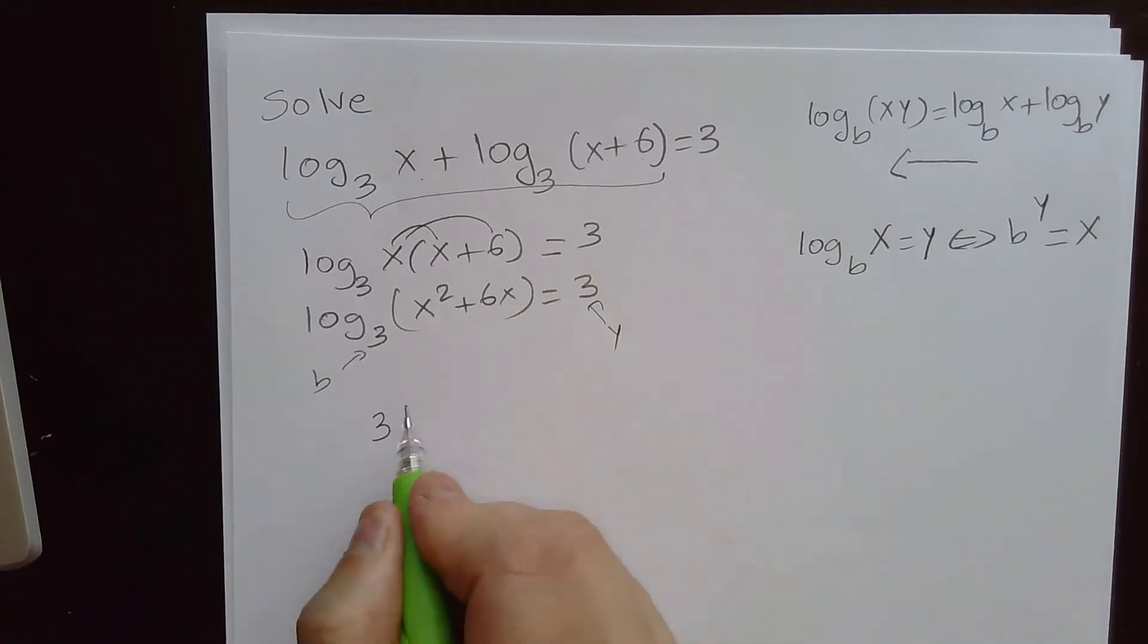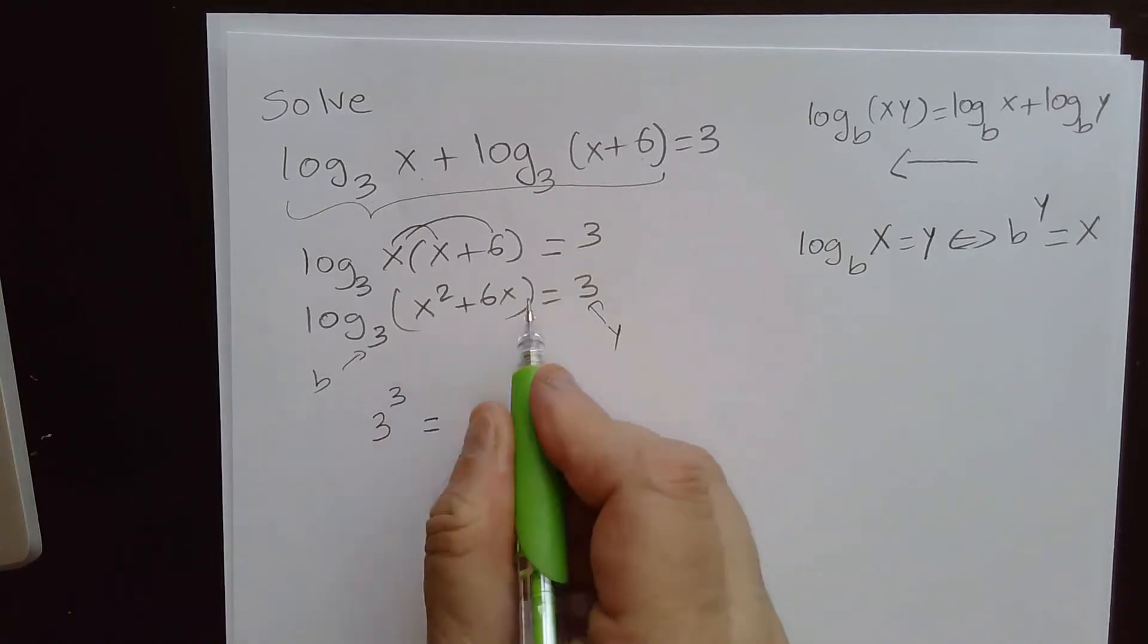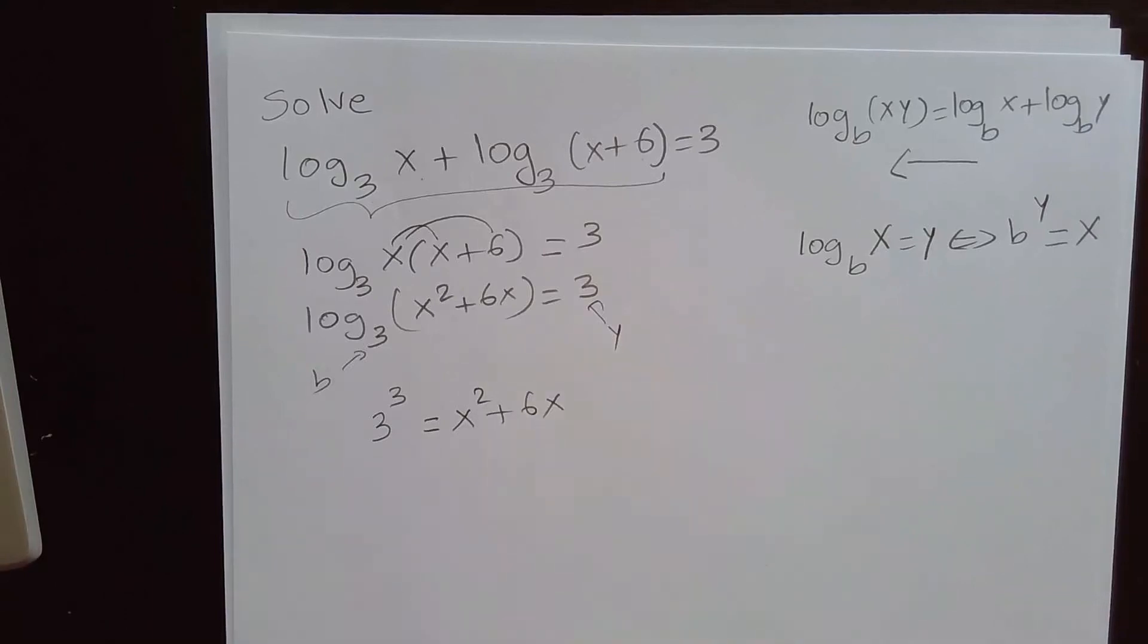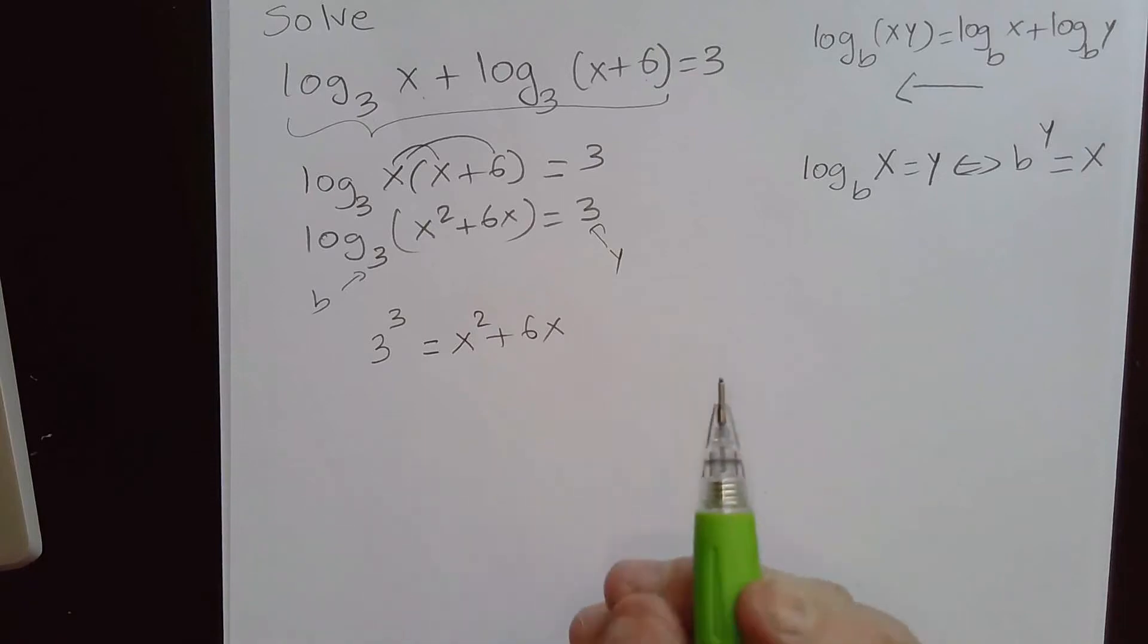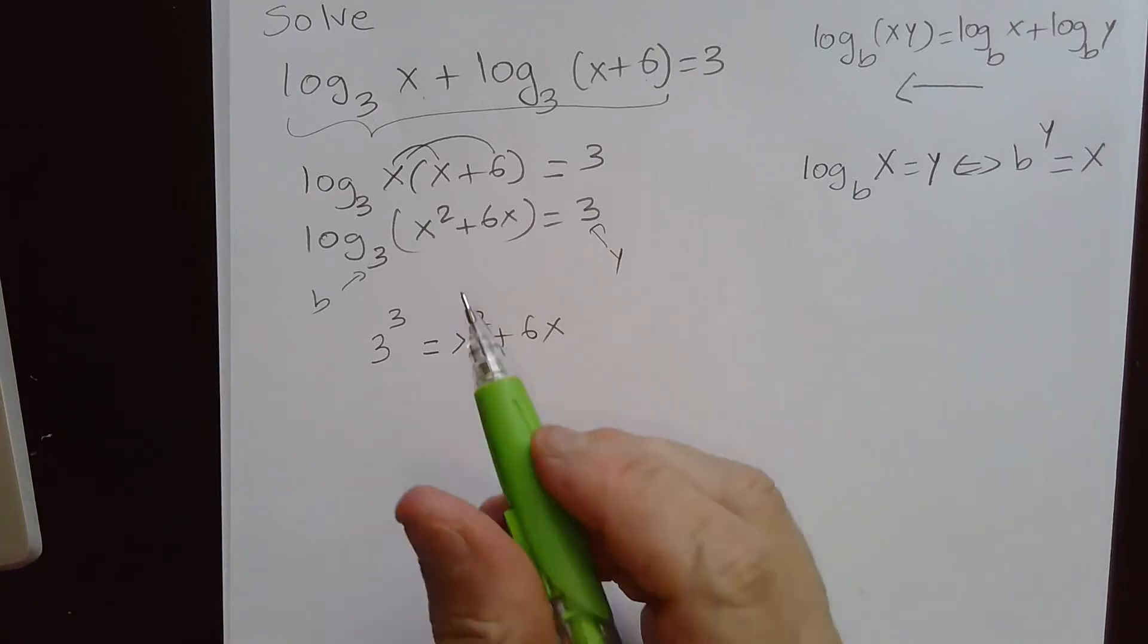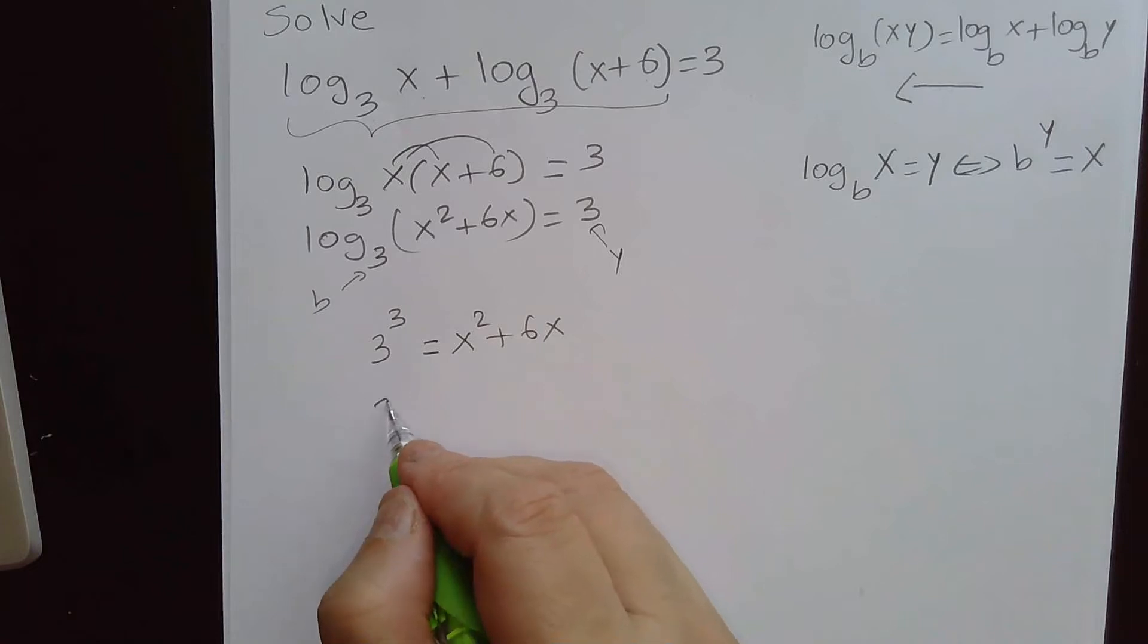We get 3 raised to the third power equals x squared plus 6x. Here we have a quadratic equation. We need to solve by taking everything on one side. 3 cubed, that is 27, equal to x squared plus 6x.